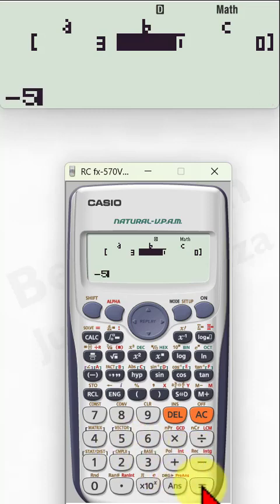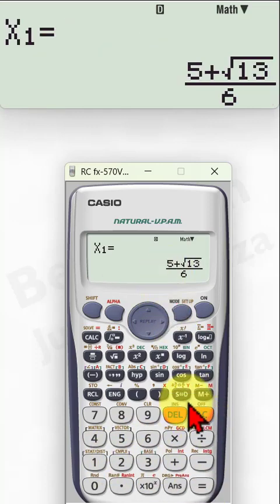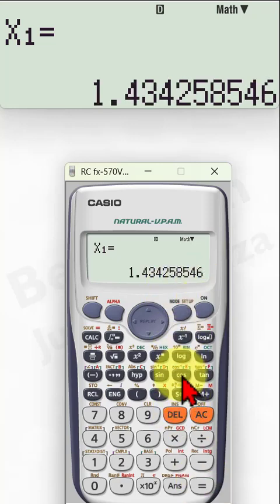Imagine you have something like this. You can see that will be the first root and the second root. You can press SD to find it in terms of decimal.